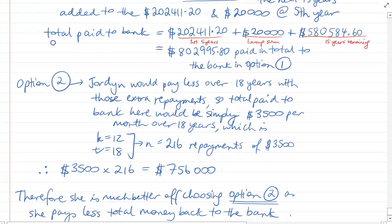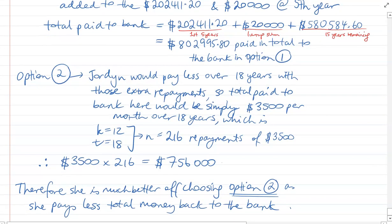For Option 2, she pays $3,500 for 216 repayments over 18 years — that's $756,000 back to the bank. Given that, she's better off choosing Option 2 because she pays less money back to the bank. Some of those last questions were quite difficult — you need to think carefully about the formula and what you're trying to find. Hopefully completing this gave you more confidence with loans, investments and annuities, and you feel very prepared for your upcoming assessment. Thanks.